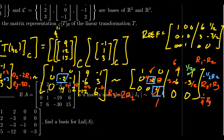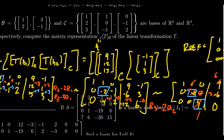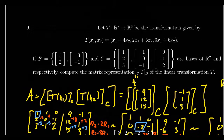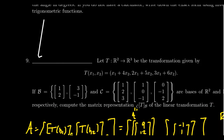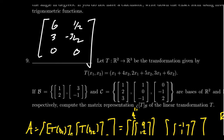Our final answer is the matrix A with columns (6, 3, 0) and (1/2, -3/2, 0). You must indicate clearly that this is the answer — don't just leave the augmented matrix and expect the grader to infer it. Note: this is not the change of basis matrix; this is the matrix representation of T using both B and C coordinates.